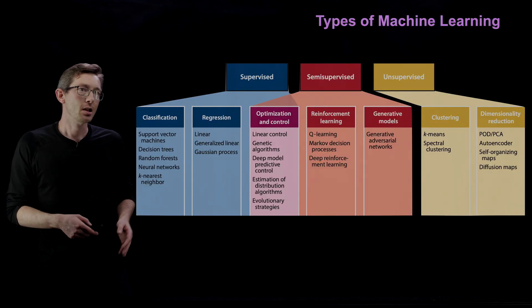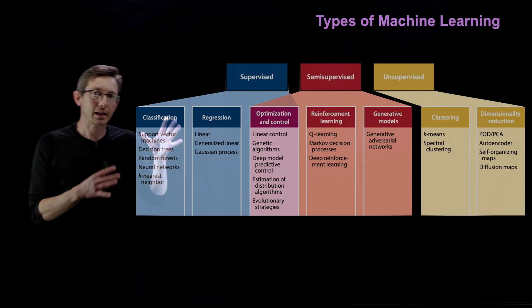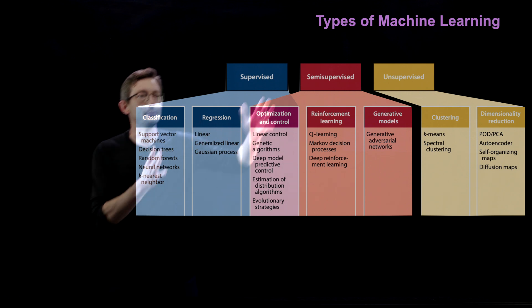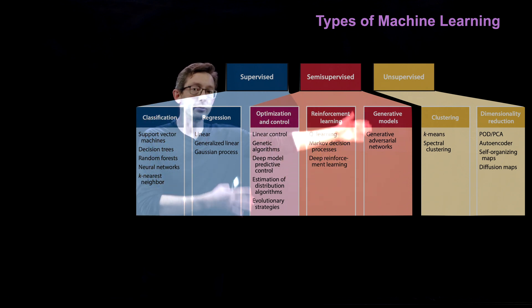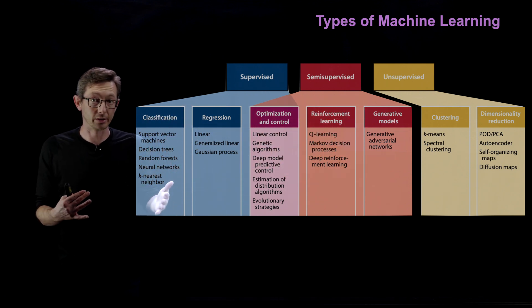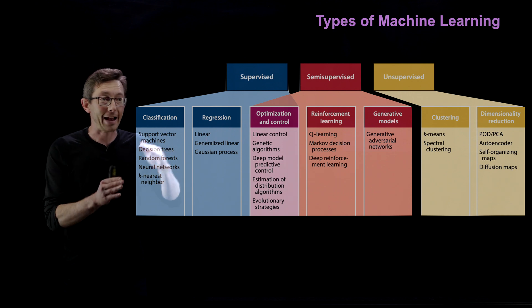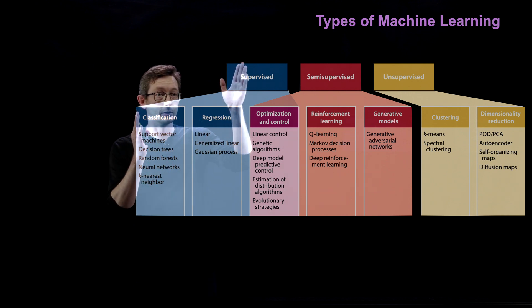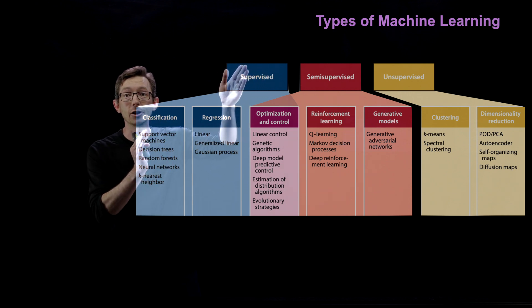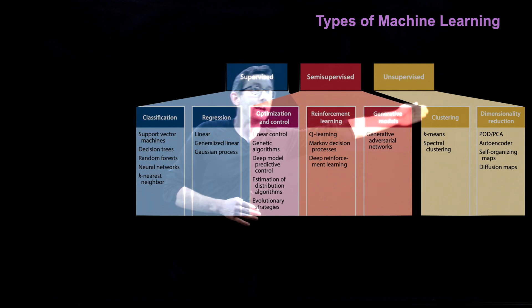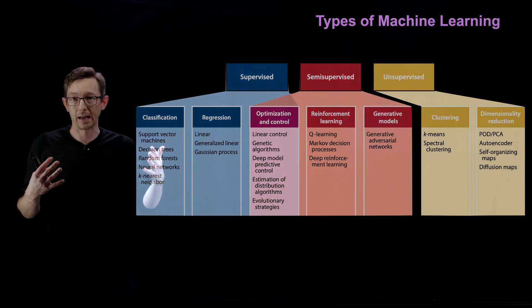Welcome back. We are in our module on a machine learning primer, breaking down the different types of machine learning and what goes into training a machine learning model. I want to dig a little deeper into the broad categorizations of machine learning types and what factors go into choosing whether you're doing a supervised classification problem or an unsupervised clustering problem.